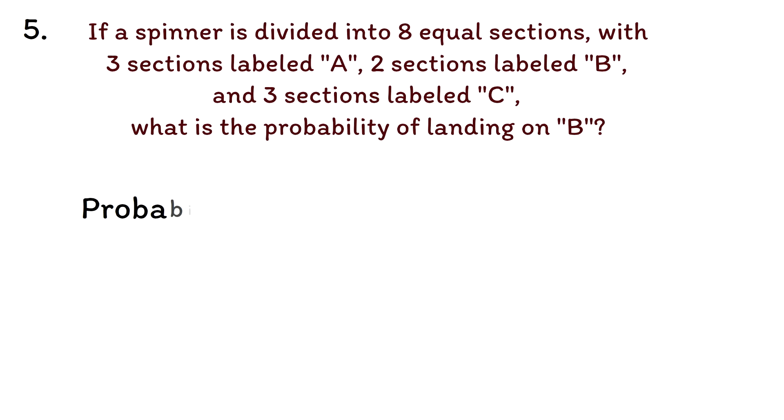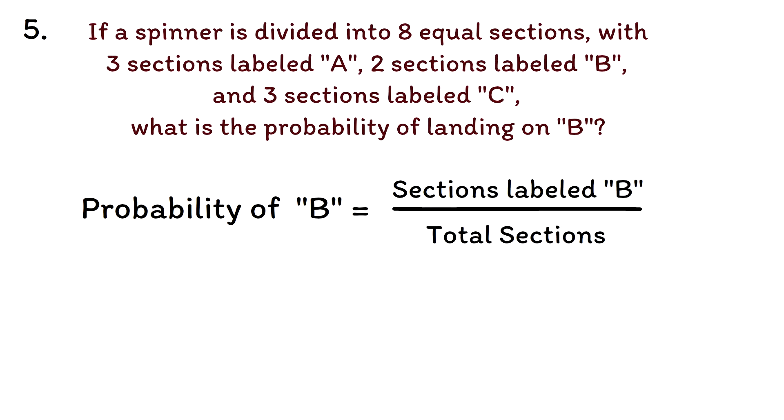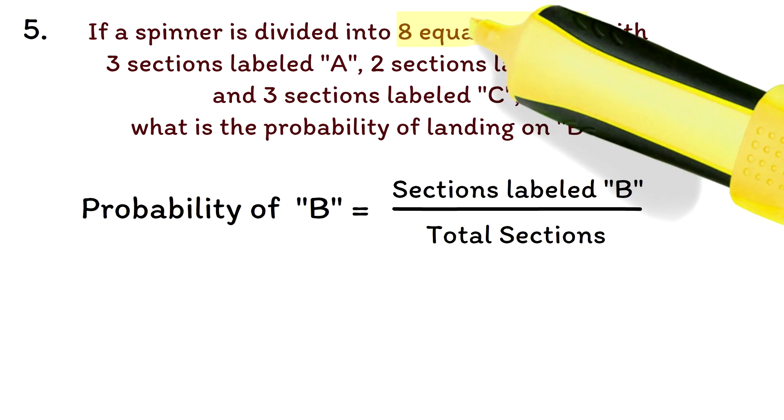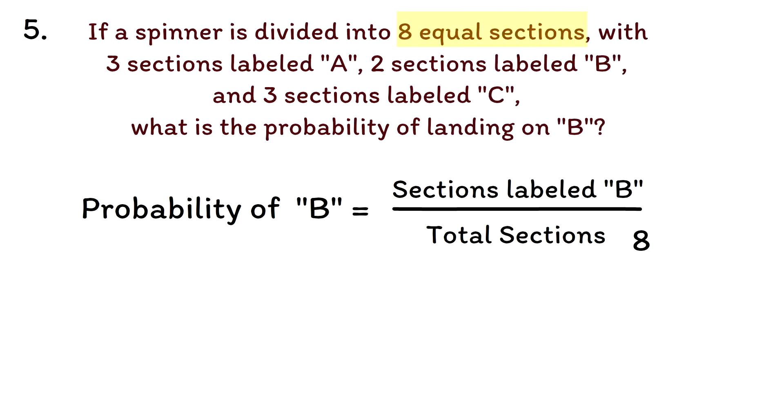The probability of landing on a section labeled B can be found by dividing the number of sections labeled B by the total number of sections on the spinner. In this case, the spinner is divided into 8 equal sections, with 2 sections labeled B.